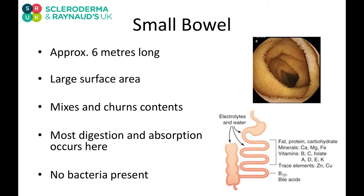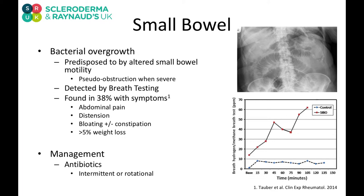Normally there should be no bacteria present in the small bowel to compete with us for these nutrients. But in scleroderma the motility of the bowel can be affected. That means things move along it much more slowly — sometimes they even stop. When they stop, the bowels become wider and bloated, and we call that pseudo-obstruction. The image at the top shows a dilated small bowel.